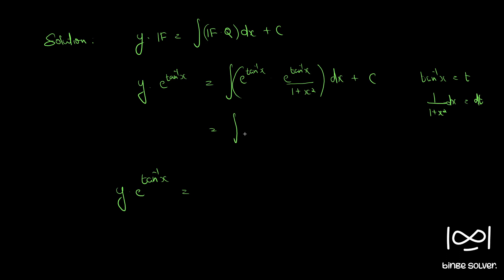Correcting: since e^(tan⁻¹x) = e^t and the other e^(tan⁻¹x) is also e^t, their product is e^(2t). So the integral is ∫ e^(2t) dt, and integrating, we get e^(2t)/2 + C.